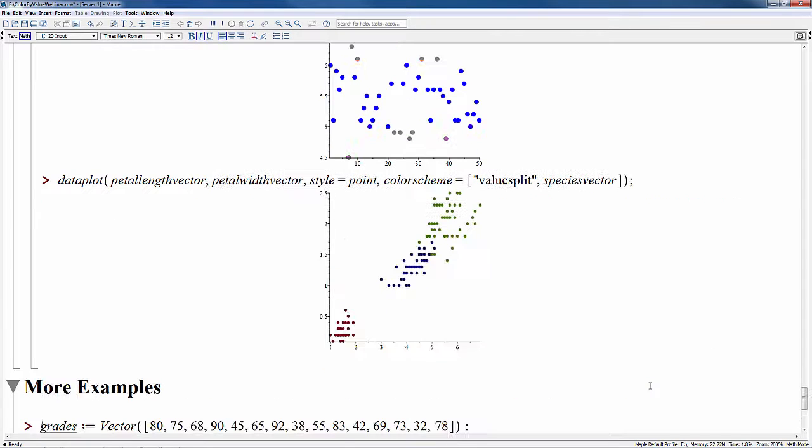And in the last example of this section, the color mapping is not actually given. So again, here we're coloring by species and that's indicated with the species vector but no color mapping tells Maple what colors to choose. So Maple just chooses some default colors.